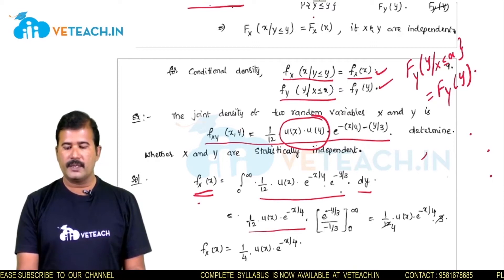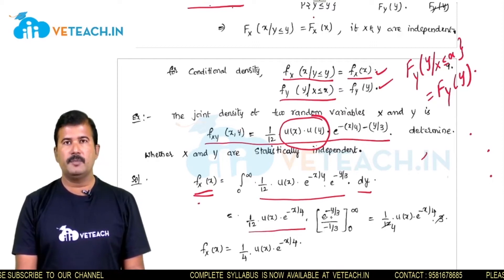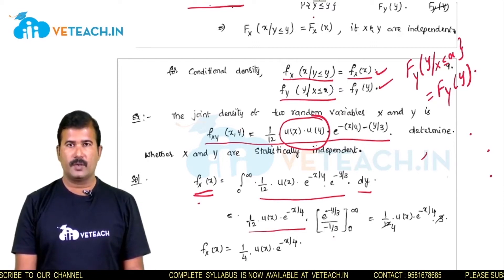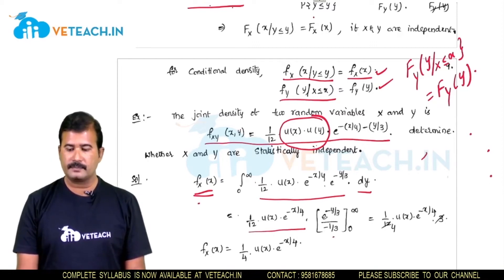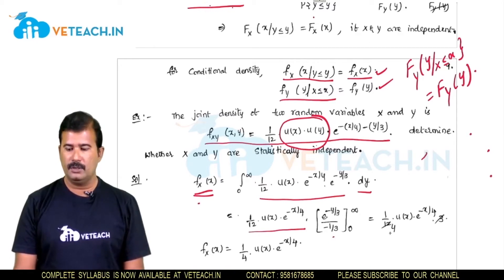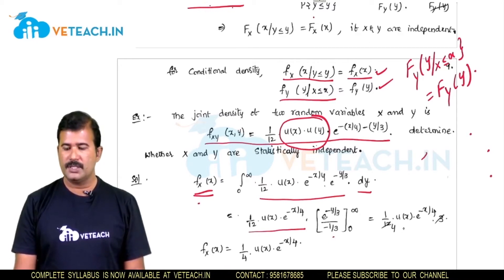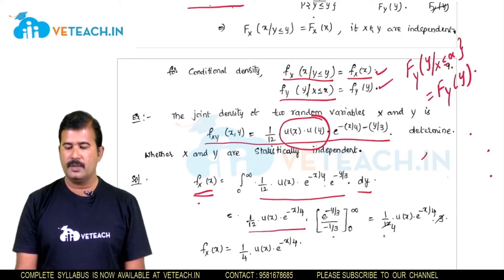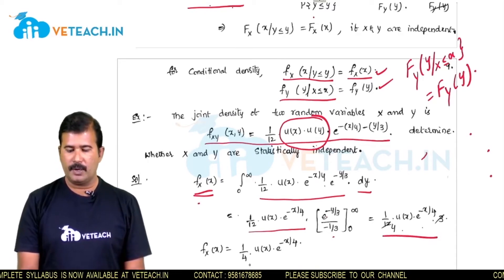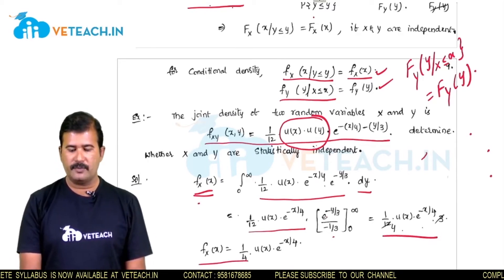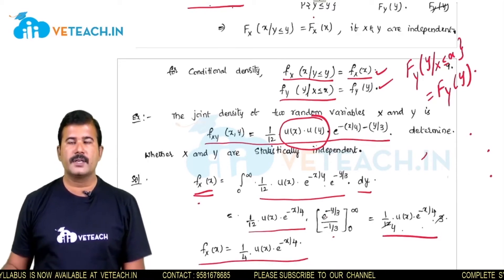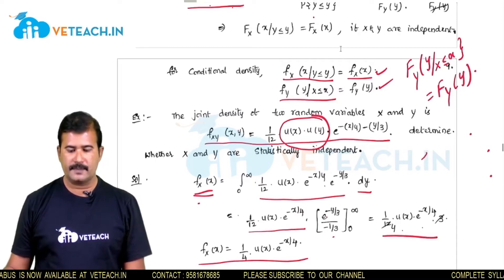Integrating e^(−y/3) gives e^(−y/3) / (−1/3), with limits from 0 to infinity. Substituting these limits, we get f_x(x) = (1/4) · u(x) · e^(−x/4) as the marginal density function in x.